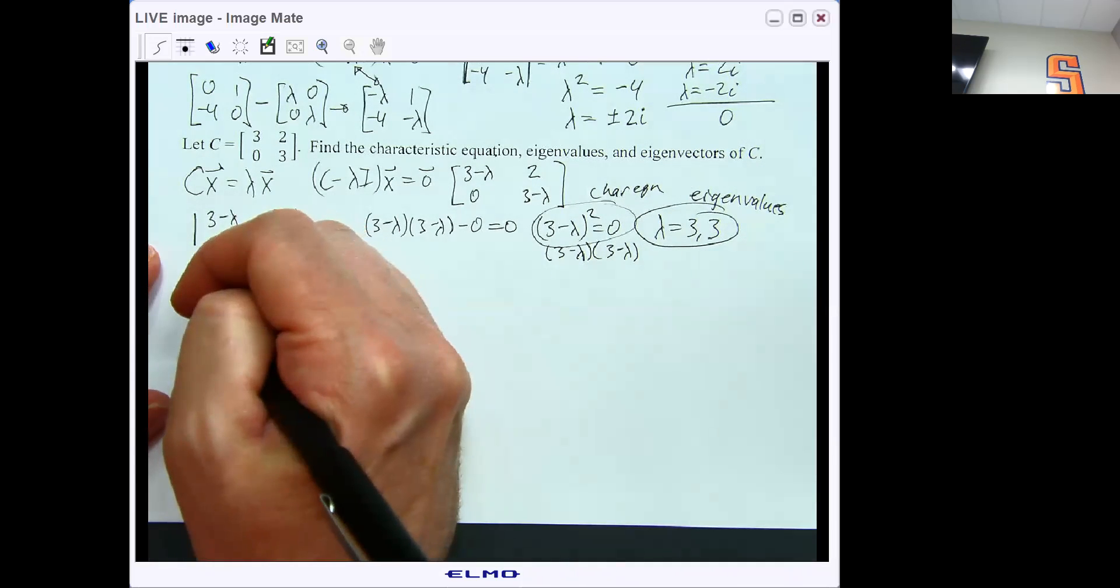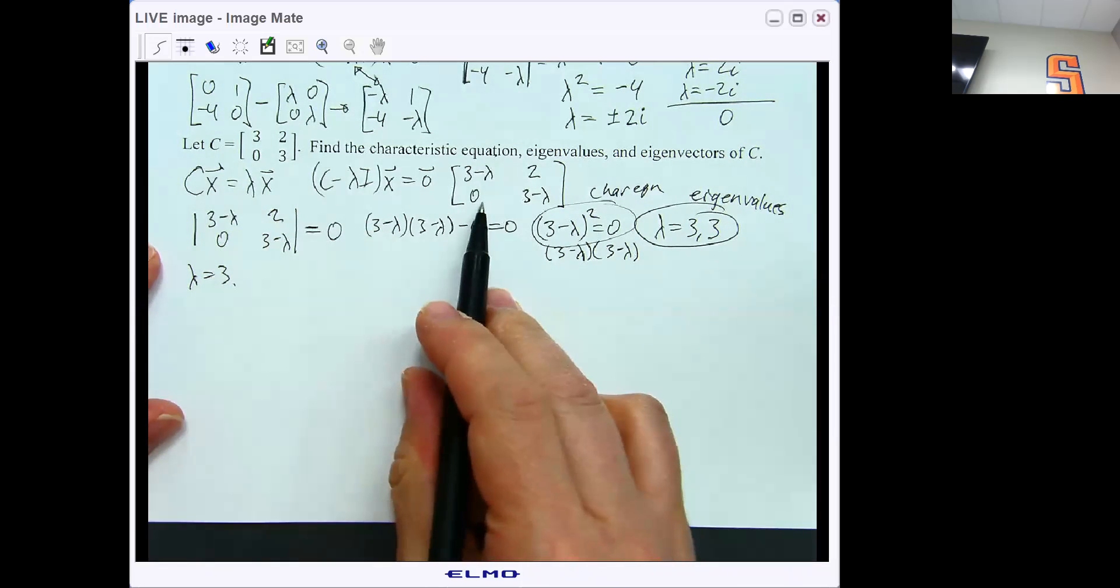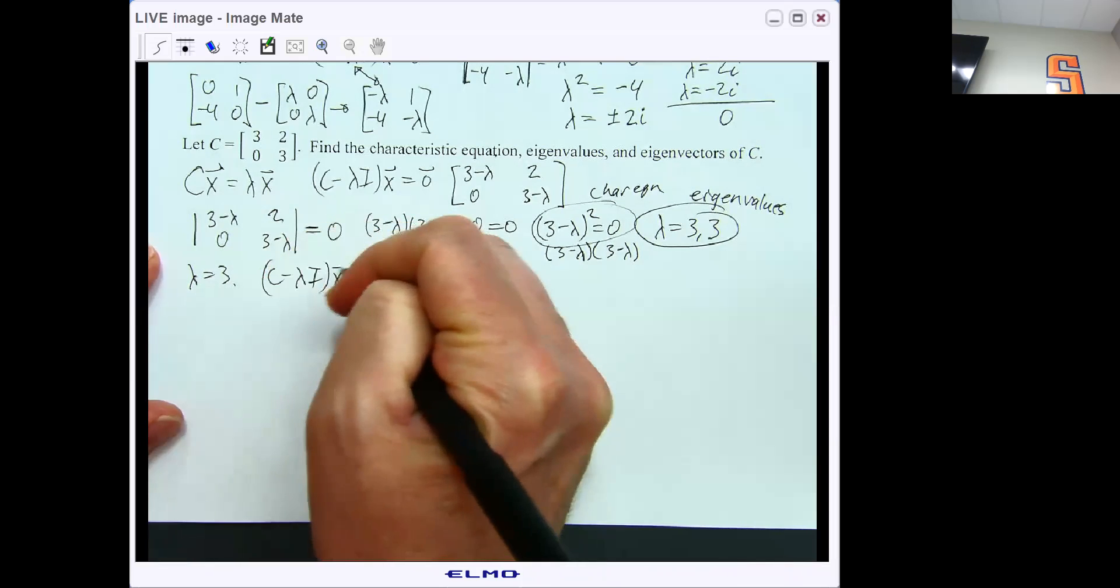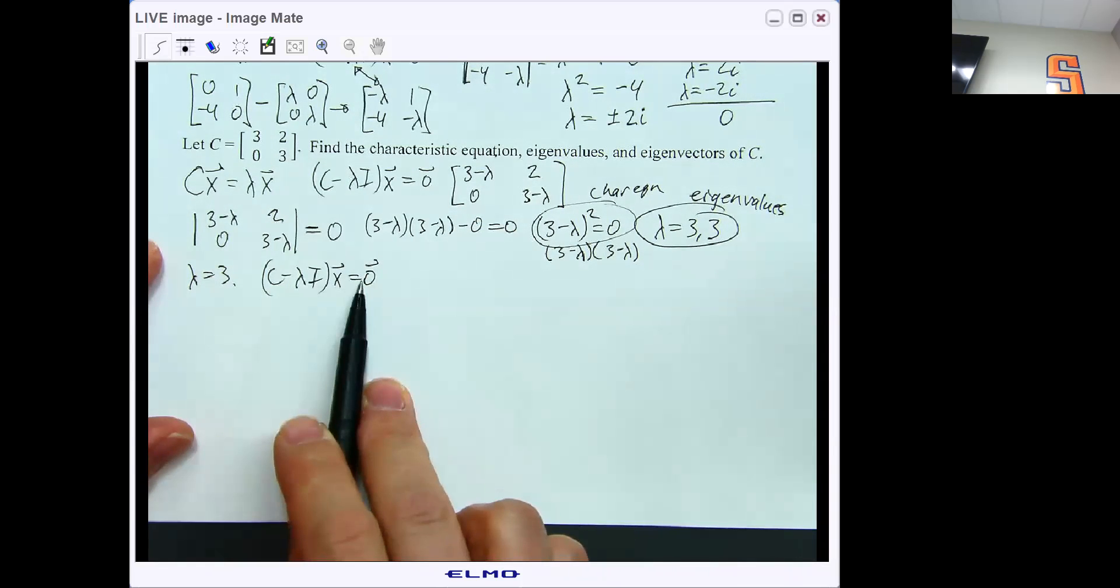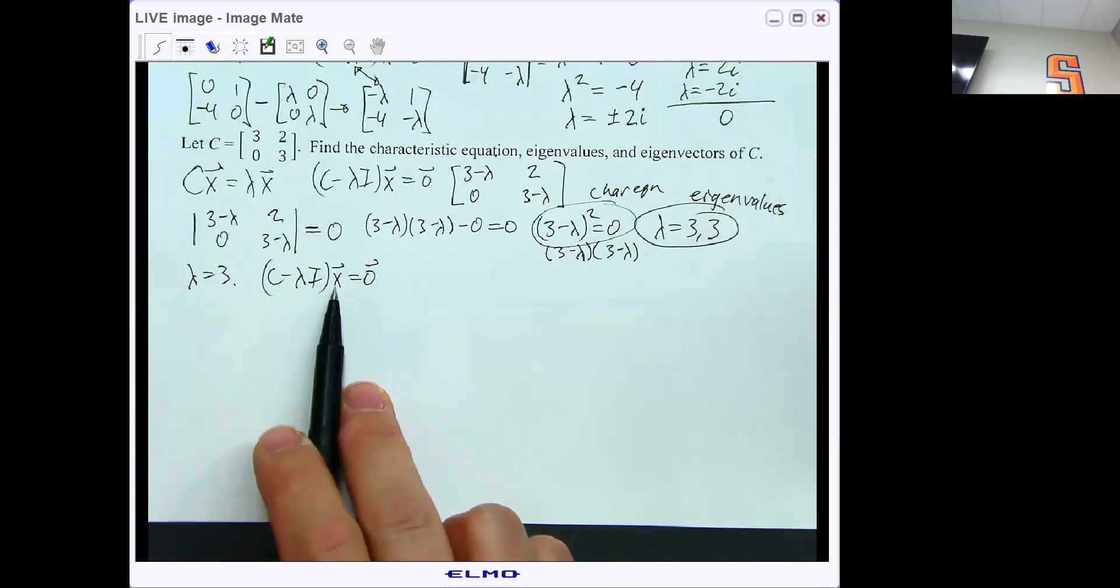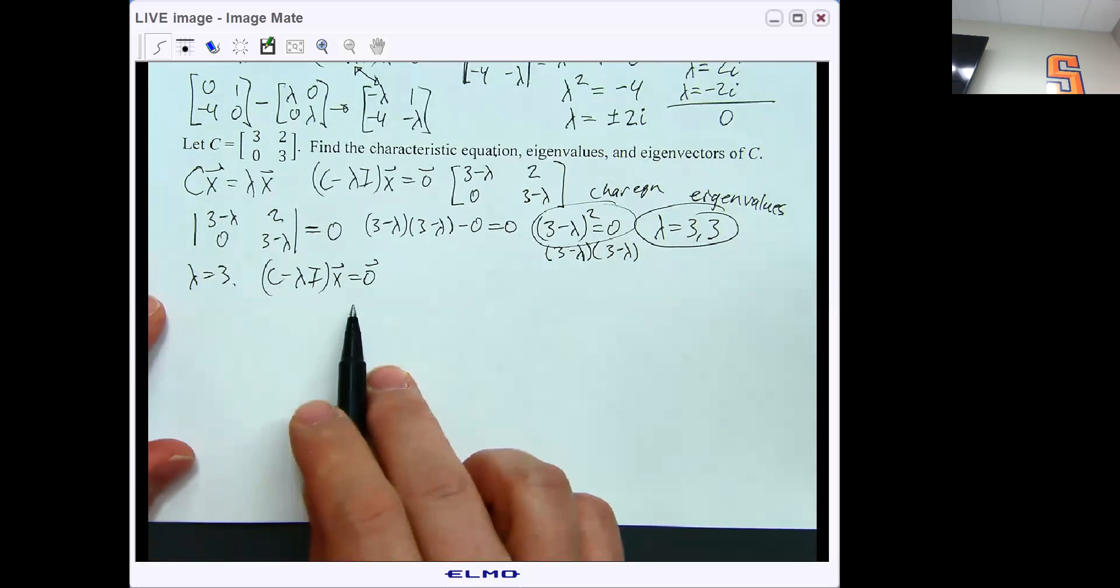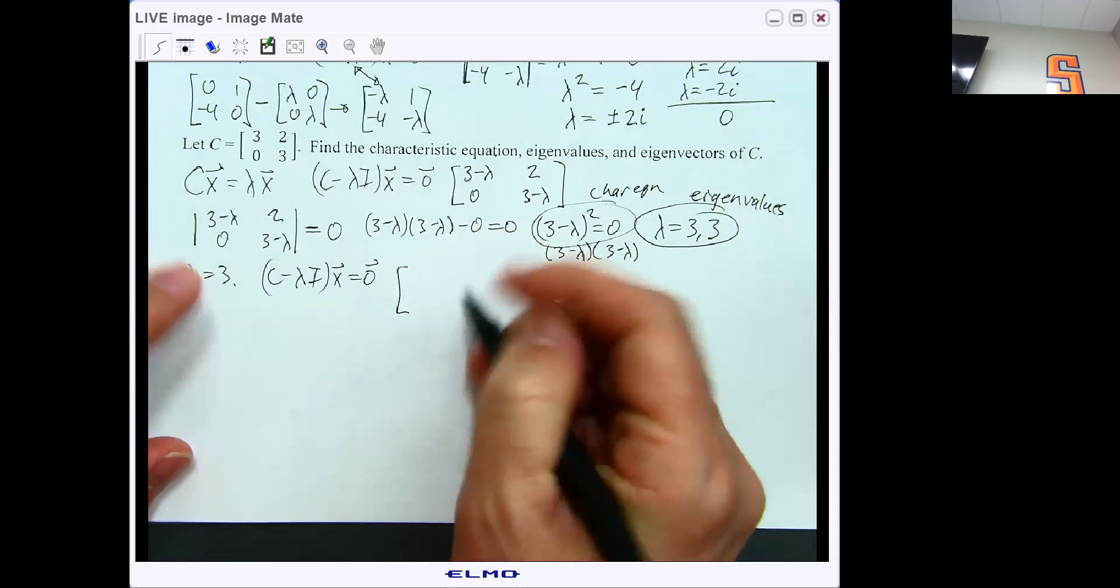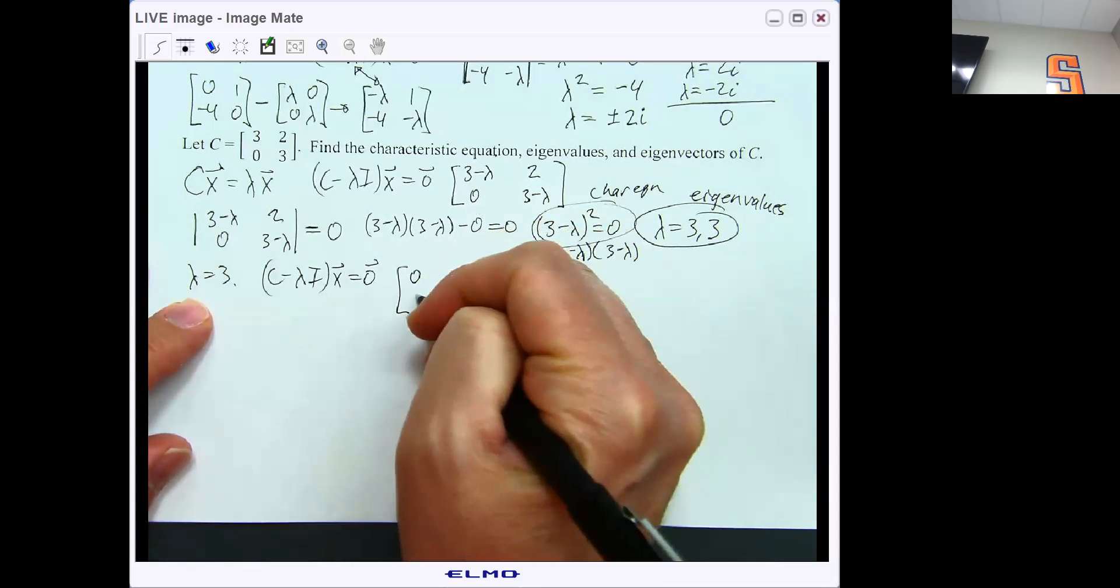Let's go ahead and find the eigenvectors of C. So let's put in lambda equals 3 into our C minus lambda I matrix and solve that for the original problem to find out when this will give us 0. In other words, what x value will the output be a scalar multiple of the matrix multiplication. So if we do that, we're going to put a 3 in, we're going to get [0, 2; 0, 0].